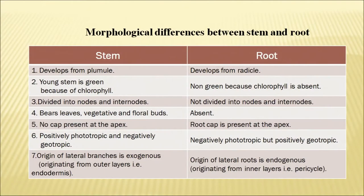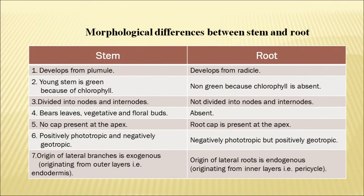Stems develop from the plumule and roots develop from the radicle. Young stem is green because of chlorophyll, while roots are non-green because no chlorophyll is present in root cells. The stem is divided into nodes and internodes but root is not. The stem bears leaves and vegetative and floral buds, while roots don't bear such structures. Roots have a root cap for protection from friction in the soil particles, but the stem needs no such cap.